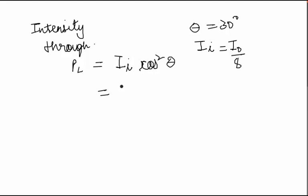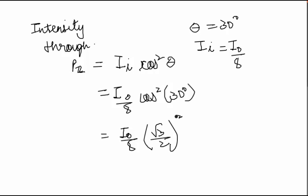So when we substitute the values, let's see what we get. So it will become I0 by 8 times cos square 30 degrees. Now cos 30 is root 3 by 2, so 3 by 4. So when we calculate this we should be getting this equal to I0 by 8 times 3 by 4.